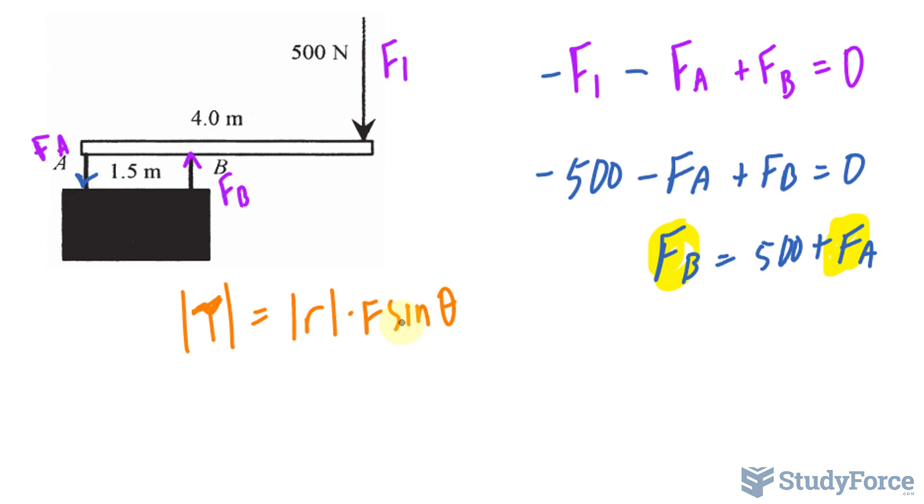And because we're only going in the y direction, sine theta, or the angle theta is 90, and sine at 90 degrees is 1. So torque is calculated by taking the radius times the force. At equilibrium, the sum of all torques equals zero as well.